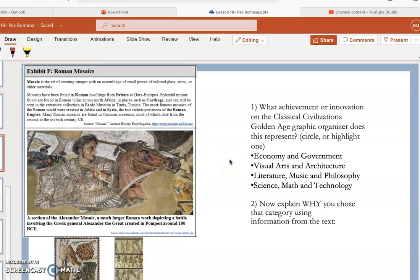Exhibit F, Roman Mosaics. Mosaic is the art of creating images with an assemblage of small pieces of colored glass, stone, or other materials.